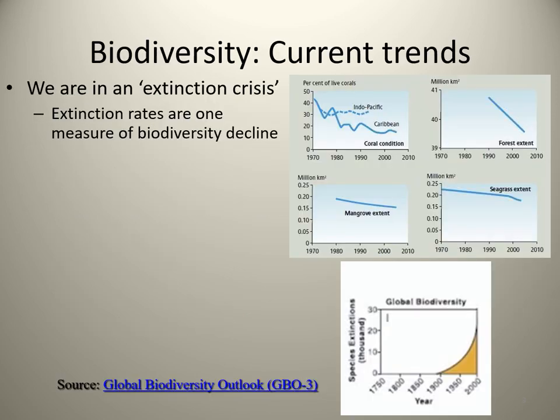Currently, we are in what has been termed an extinction crisis. Extinction rates are one way to measure biodiversity decline. Right now we're in the worst extinction since the extinction of the dinosaurs.